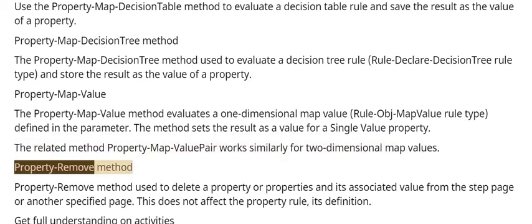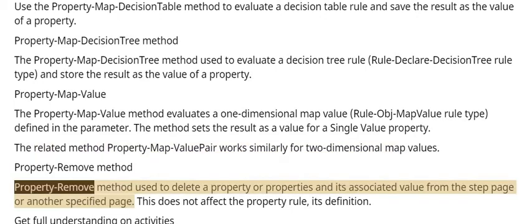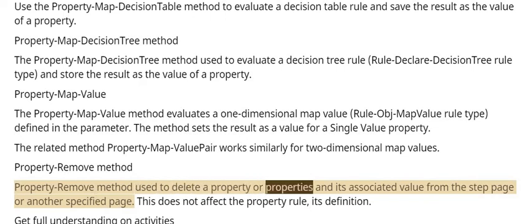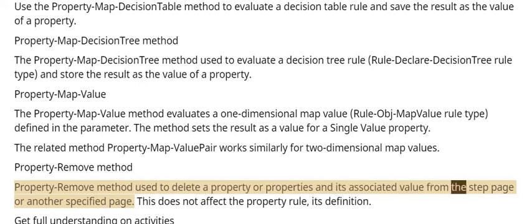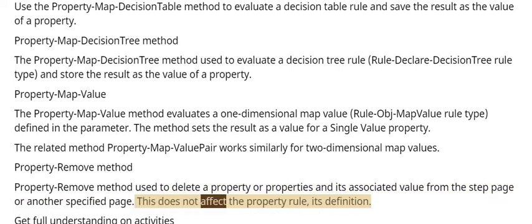The Property Remove method is used to delete a property or properties and its associated value from the step page or another specified page. This does not affect the property rule or its definition.